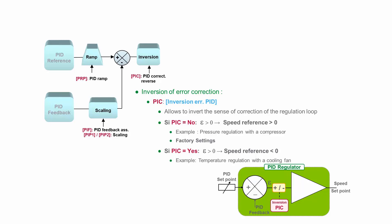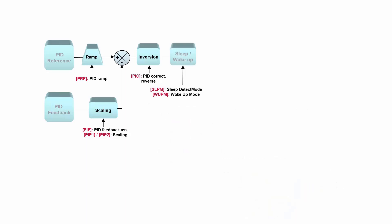But for example, if you have some cooling application where you need to increase the speed of the fan if the temperature goes higher, then you need to inverse the error correction. After that we enter the sleep wake up function, which we will do in a separate video, so for now we will skip it.